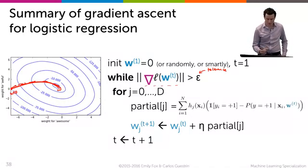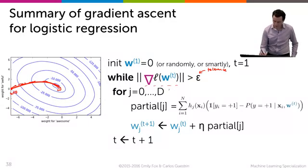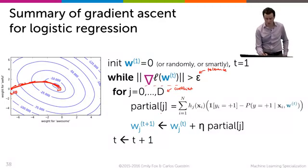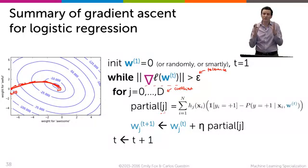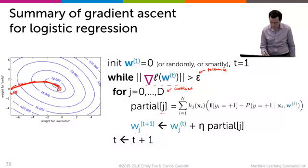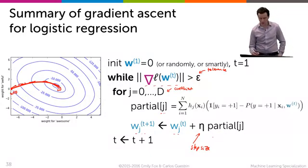And every time we take an iteration, we go feature by feature or coefficient by coefficient, compute that partial derivative with respect to coefficient j. So what is the derivative with respect to that coefficient? And then we just update the coefficient Wj at t plus 1 to be Wj at t plus the step size times this derivative that we just computed.